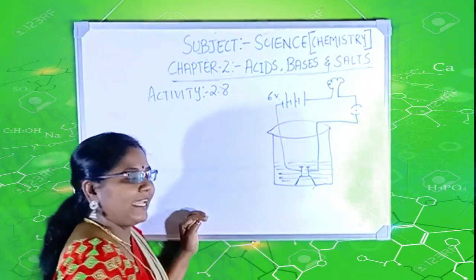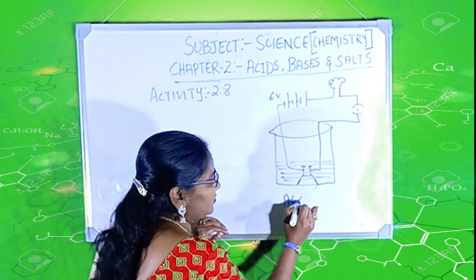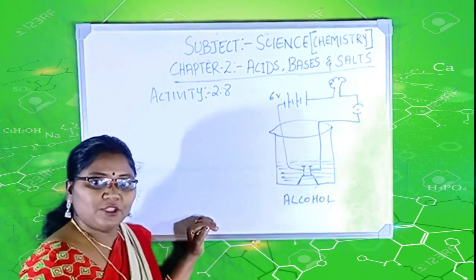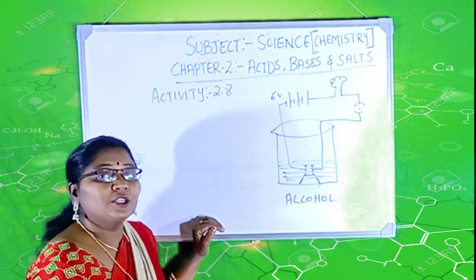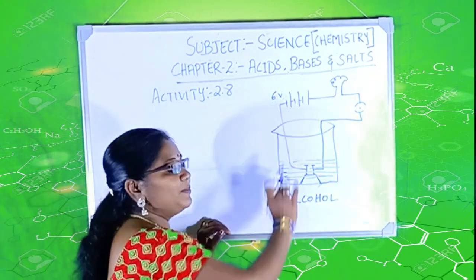Now, remove this glucose and fill it with alcohol. Again, with the alcohol solution, if you switch on, the bulb will not glow. I repeat, the bulb will not glow.